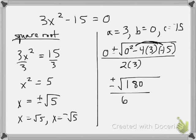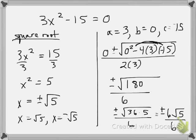Well can I simplify this? Sure I can. 180 is 36 times 5. And what is the square root of 36? It's going to be 6 and so now what happens to the 6's they cancel and you can see we get the same answers we did with the square root property.